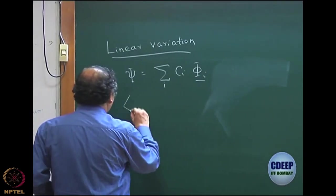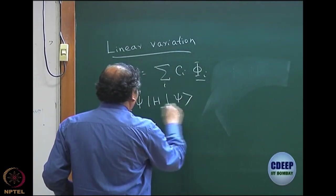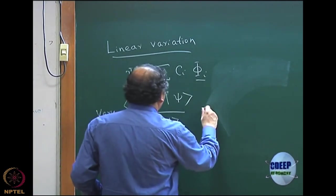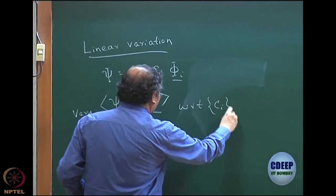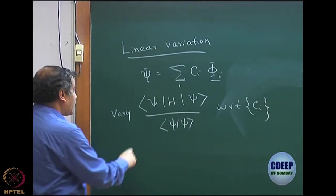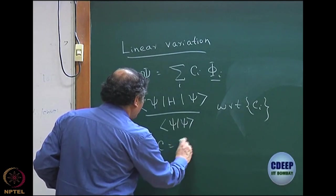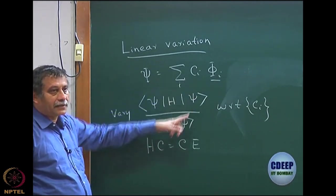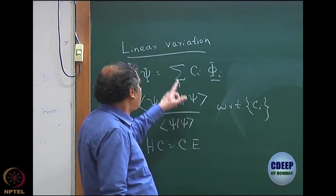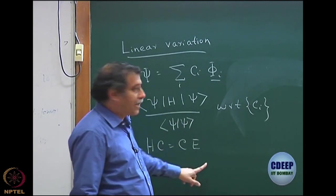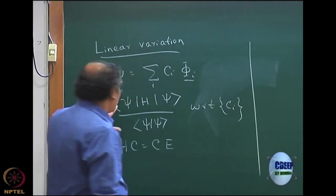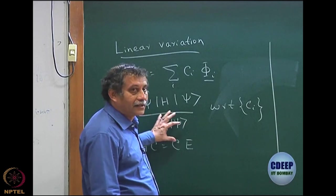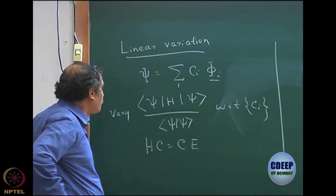The theorem says that if I do a variation in the normal way — varying with respect to the coefficient C_I — then the result you get is an eigenvalue equation of the form HC = CE in general form, where C is the coefficient matrix containing all the columns of the eigenvectors and E is the diagonal matrix of all the eigenvalues of this problem. This is something we have already proved. I can redo it: taking a Lagrange multiplier with the normalization set to 1 and varying the coefficients — we have already proved it.